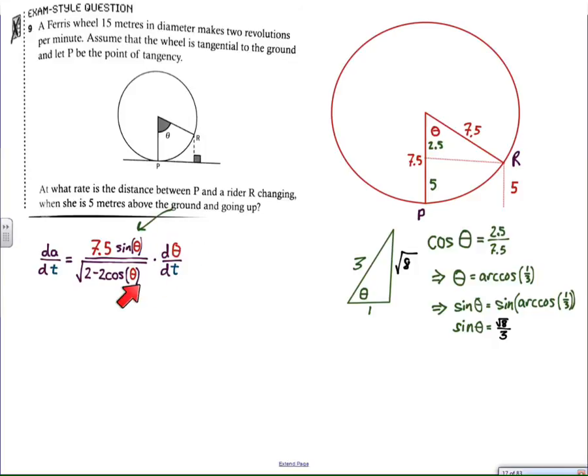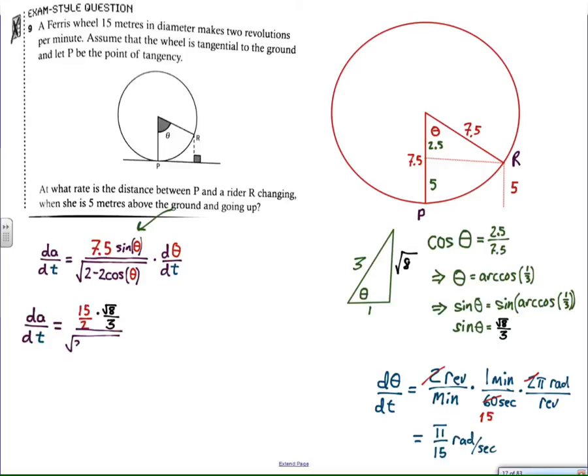Now I have sine of theta is √8/3, and cosine of theta is 1/3. All I need now is dθ/dt, and we have to be careful here. We're talking about distance in meters, and time in seconds because meters per second is a standard unit of speed. I have to take dθ/dt and go from 2 revolutions per minute into seconds. Using dimensional analysis, 2 revolutions per minute equates to 1/30 of a revolution per second. Multiplying by 2π radians per revolution, we get dθ/dt as π/15 radians per second.